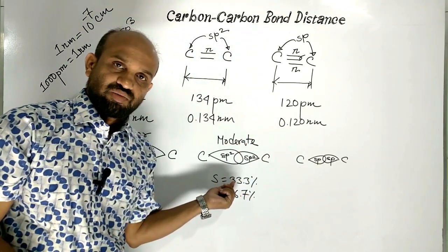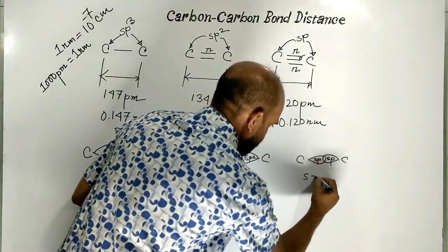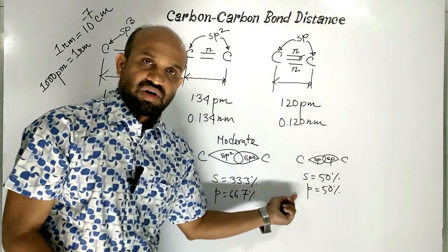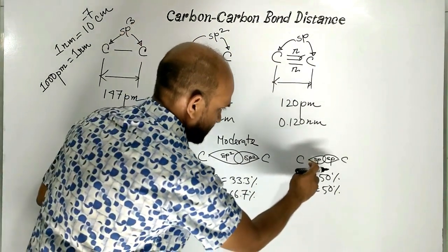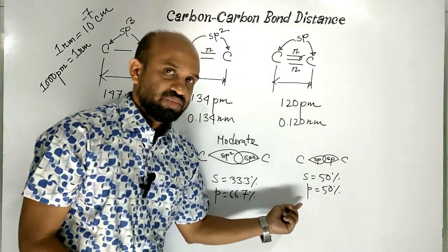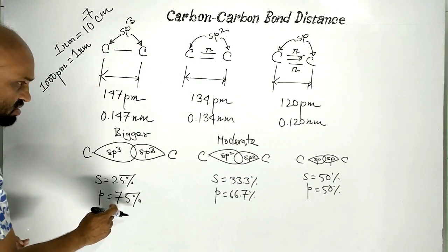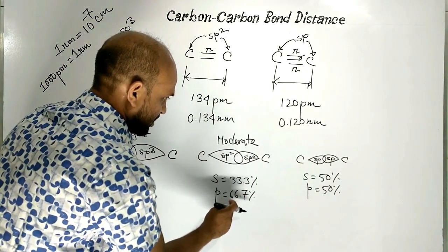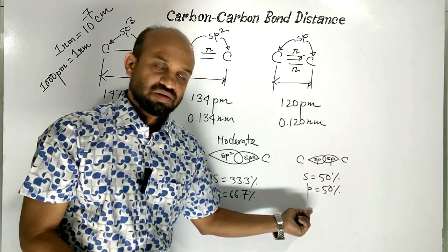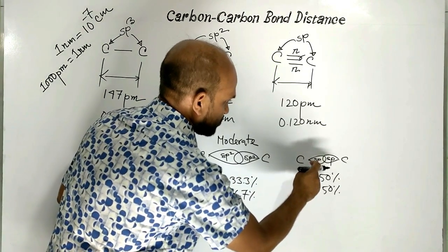In the case of sp hybrid orbitals, the s character is 50% and p character is 50% — half and half. As we go from sp3 to sp2 to sp, the p character decreases from 75% to 66.7% to 50%, and s character increases. That is why the size of sp orbitals is the smallest.